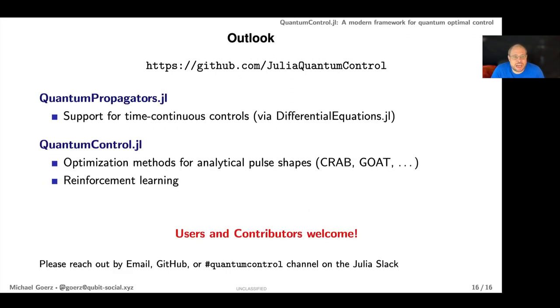What are the next steps? For the propagators we would like better support for control fields that aren't just piecewise constants, and that would allow us to tie into the differential equations ecosystem which has some really state-of-the-art solvers. For optimal control we'd like to have optimizers that can adapt more to experimental constraints—methods like CRAB or GOAT—and also more machine learning types of methods.